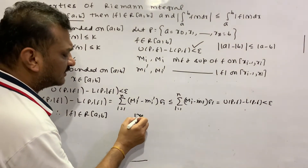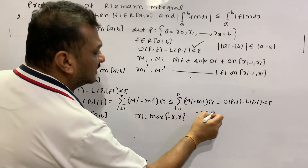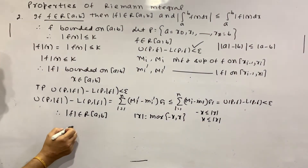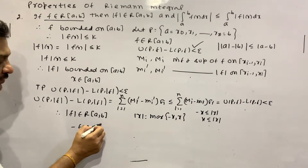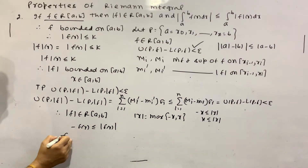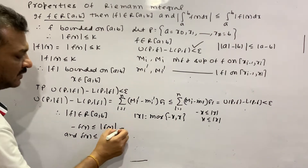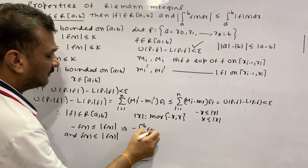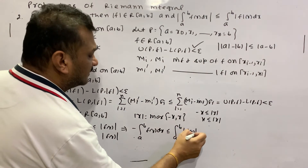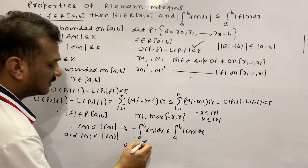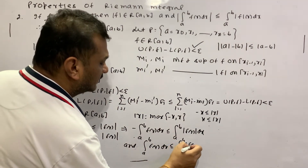Now I will prove the integral inequality. We use the fact that |x| = max(-x, x), meaning -x ≤ |x| and x ≤ |x|. Using this property: -F(x) ≤ |F(x)| and F(x) ≤ |F(x)|. Therefore, integrating: -∫ from A to B of F(x) dx ≤ ∫ from A to B of |F(x)| dx, and also ∫ from A to B of F(x) dx ≤ ∫ from A to B of |F(x)| dx.